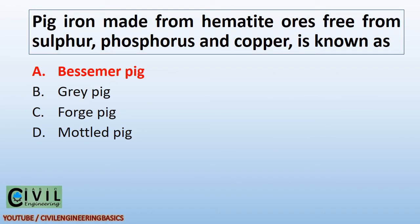Pig iron made from hematite ores free from sulfur, phosphorus, and copper is known as Bessemer pig.